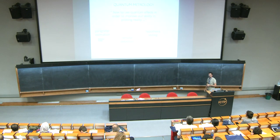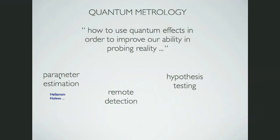This talk is about quantum estimation theory and quantum metrology. Quantum metrology is the research sector of quantum information theory that deals with how to use quantum effects like entanglement and squeezing in order to improve your ability to probe reality. Quantum metrology consists of several sub-sectors like parameter estimation, remote detection, hypothesis testing, and so on. I will give you a generic overview of this field.